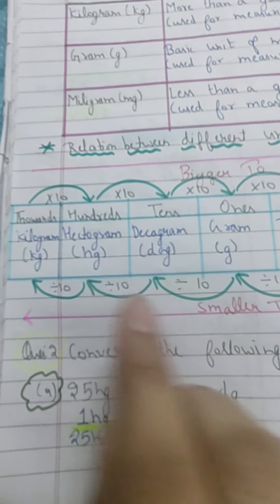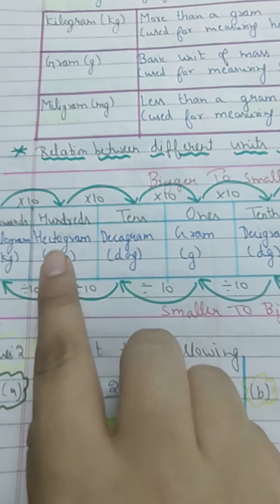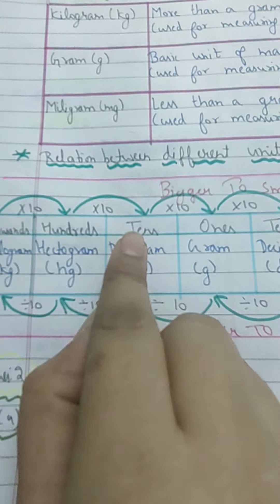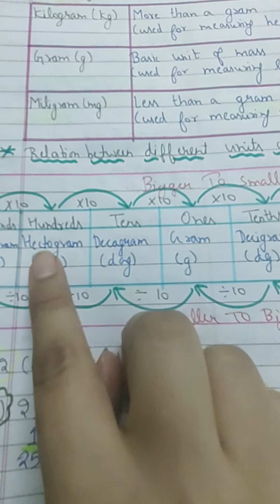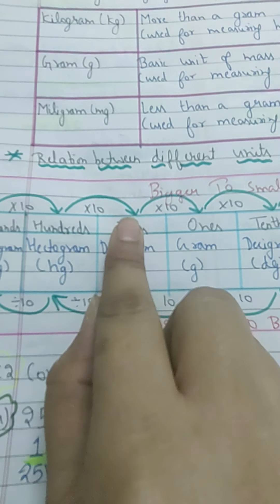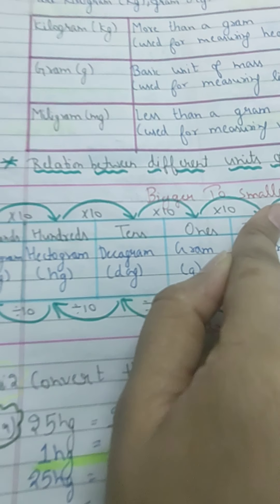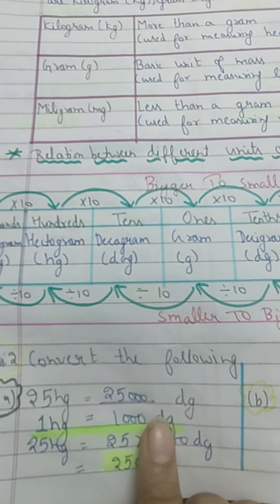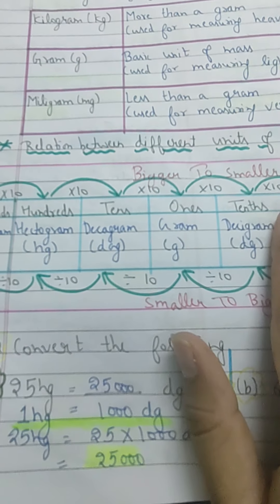We have to convert 25 hectogram to decigram. Going from hectogram to decigram: hectogram → decagram → gram → decigram — that is three jumps. One jump equals 10, two jumps equals 100, and three jumps equals 1,000. So 1 hectogram equals 1,000 decigrams. When going from bigger to smaller, you multiply.